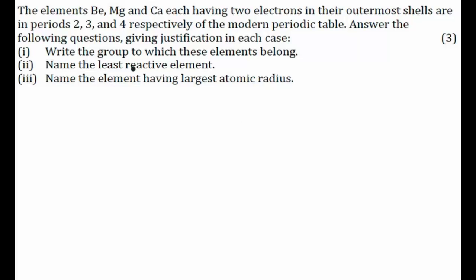Dear friends, let's see this particular question. The elements beryllium, magnesium, and calcium, each having two electrons in the outermost shell, are in periods two, three, and four respectively of the modern periodic table. Answer the following questions giving justification in each case. The first part is: write the group to which these elements belong.